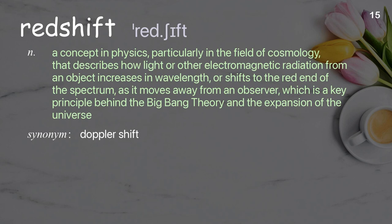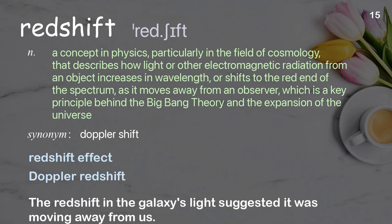Redshift: A concept in physics, particularly in cosmology, that describes how light or other electromagnetic radiation from an object increases in wavelength, or shifts to the red end of the spectrum, as it moves away from an observer — a key principle behind the Big Bang Theory and the expansion of the universe. Examples: Redshift effect, Doppler redshift. The redshift in the galaxy's light suggested it was moving away from us.